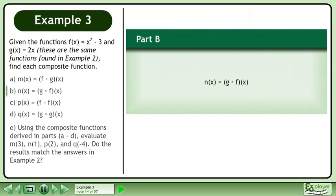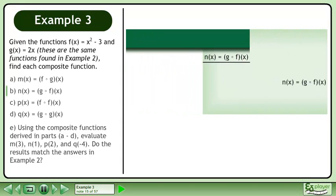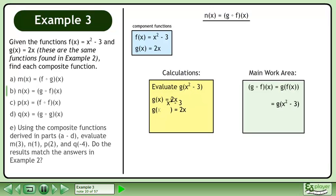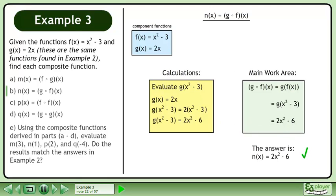In part b, we'll derive n equals g of f. Set up the workspace. Rewrite g using regular function notation, then replace f with x squared minus 3. We need to evaluate g at x squared minus 3. We know that g equals 2x, so g at x squared minus 3 equals 2 times x squared minus 3. The result is 2x squared minus 6, so n equals 2x squared minus 6.